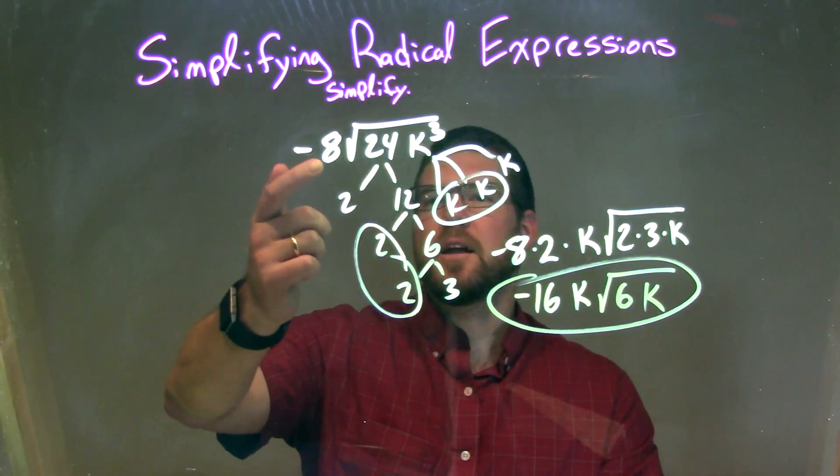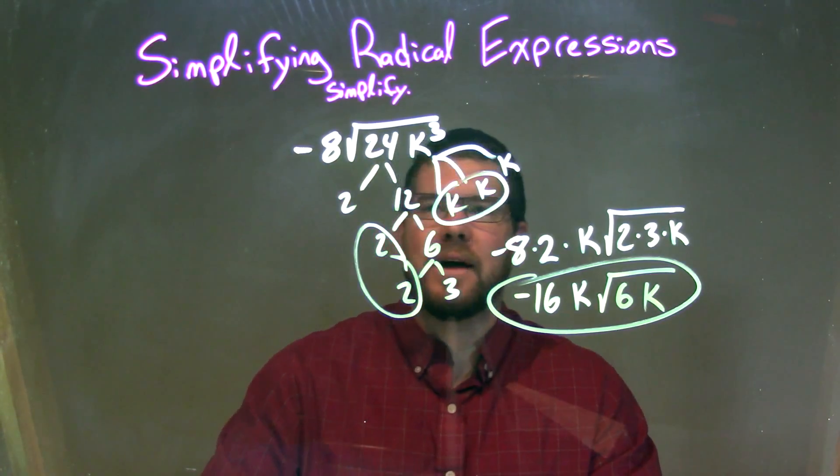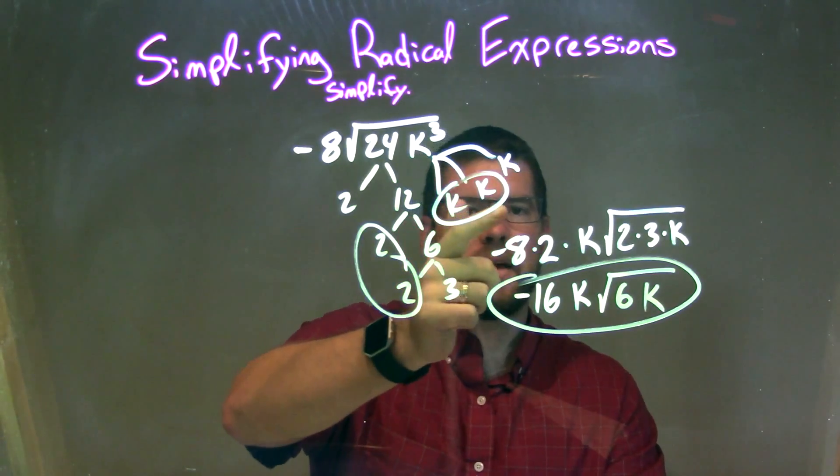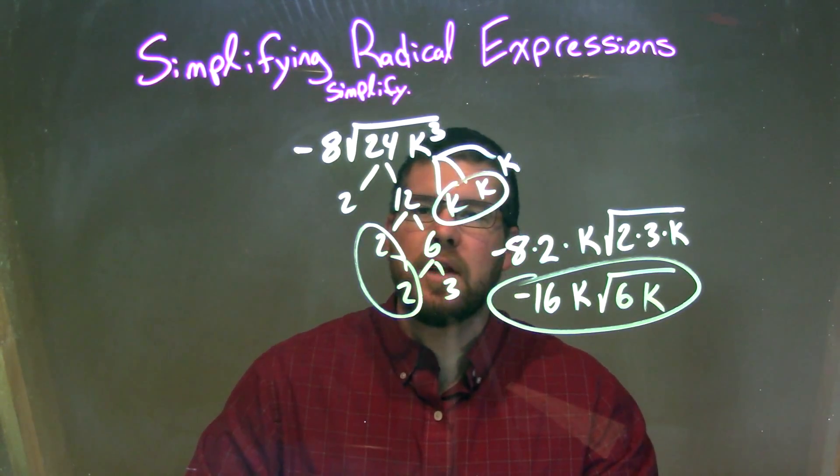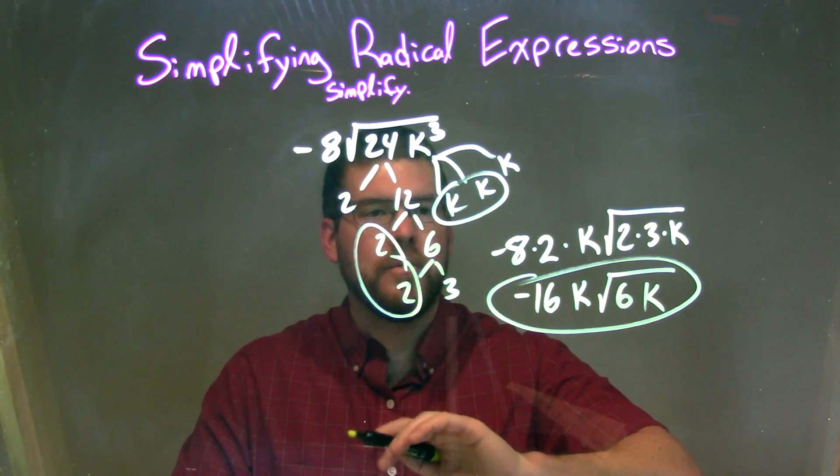So let's recap. We're given negative 8 times the square root of 24k to the third power. Prime factorization of 24 is 2 times 2 times 2 times 3, and k to the third is k times k times k. So now we circle our pairs, a pair of 2s and a pair of ks. They're represented by singles on the outside of the square root.